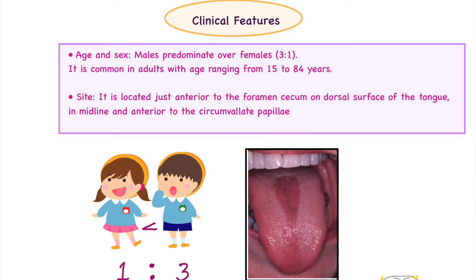Regarding clinical features, this lesion is more common in males than females, with a ratio of 3:1. It is more common in adults, with the age range spanning from 15 to 84 years. Regarding site predilection, it is located just anterior to the foramen cecum on the dorsum of the tongue in the midline, just anterior to the circumvallate papillae.